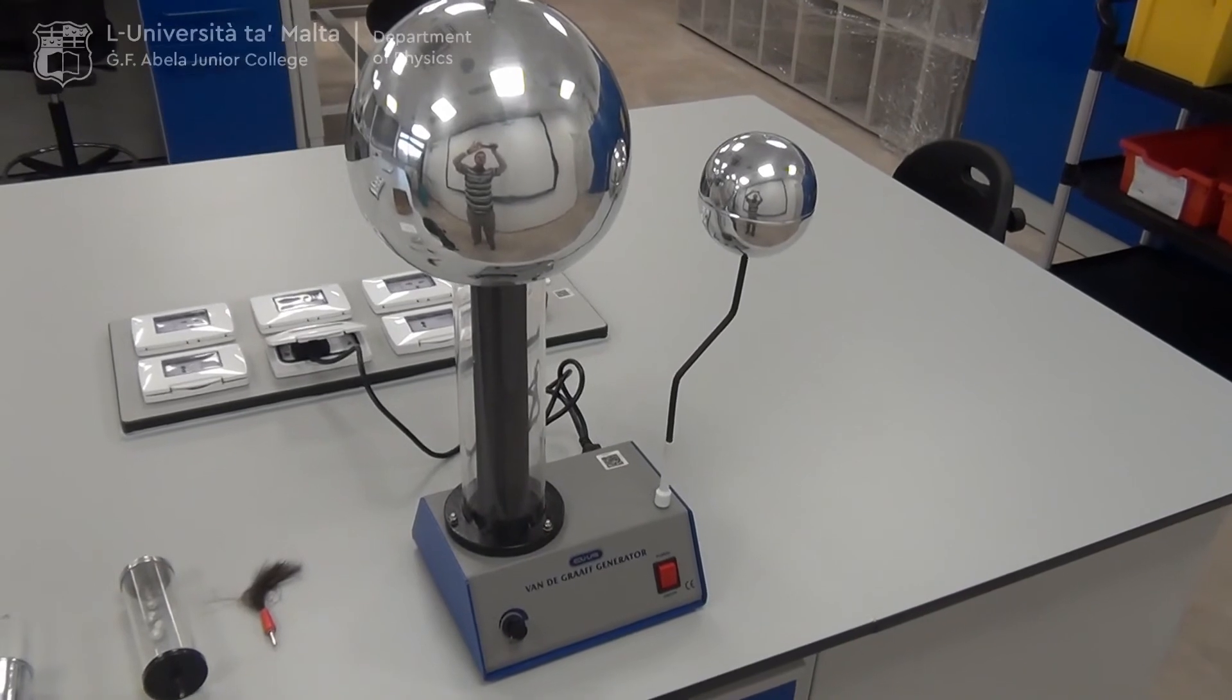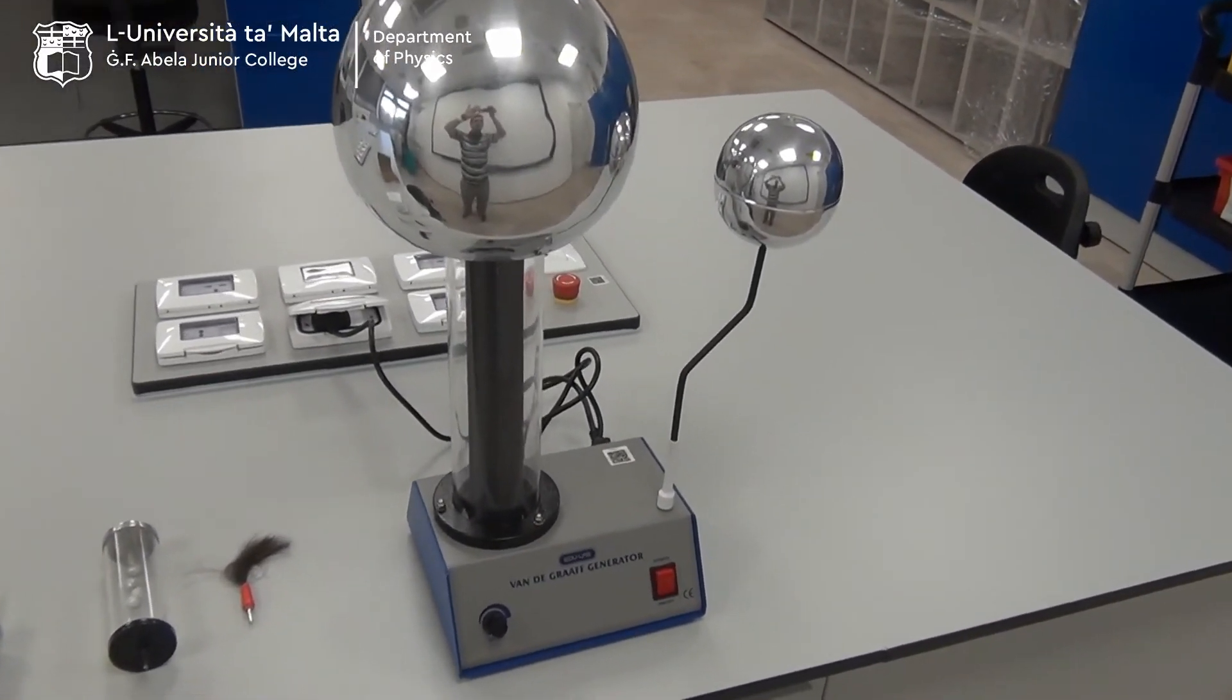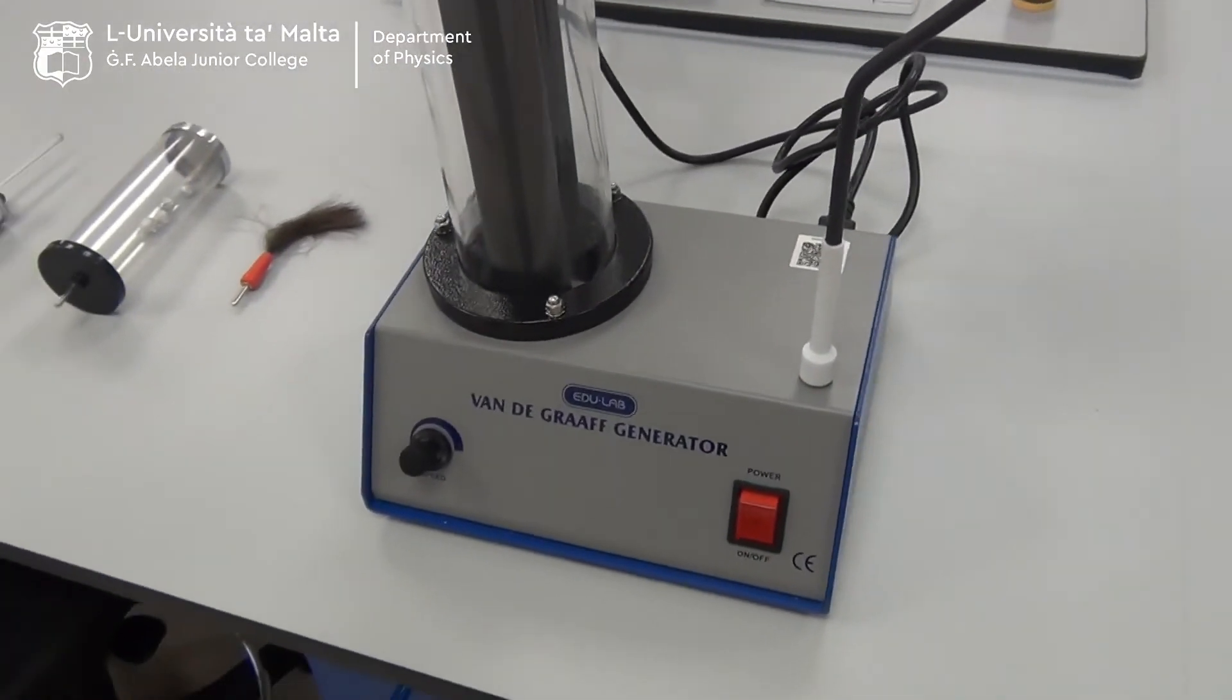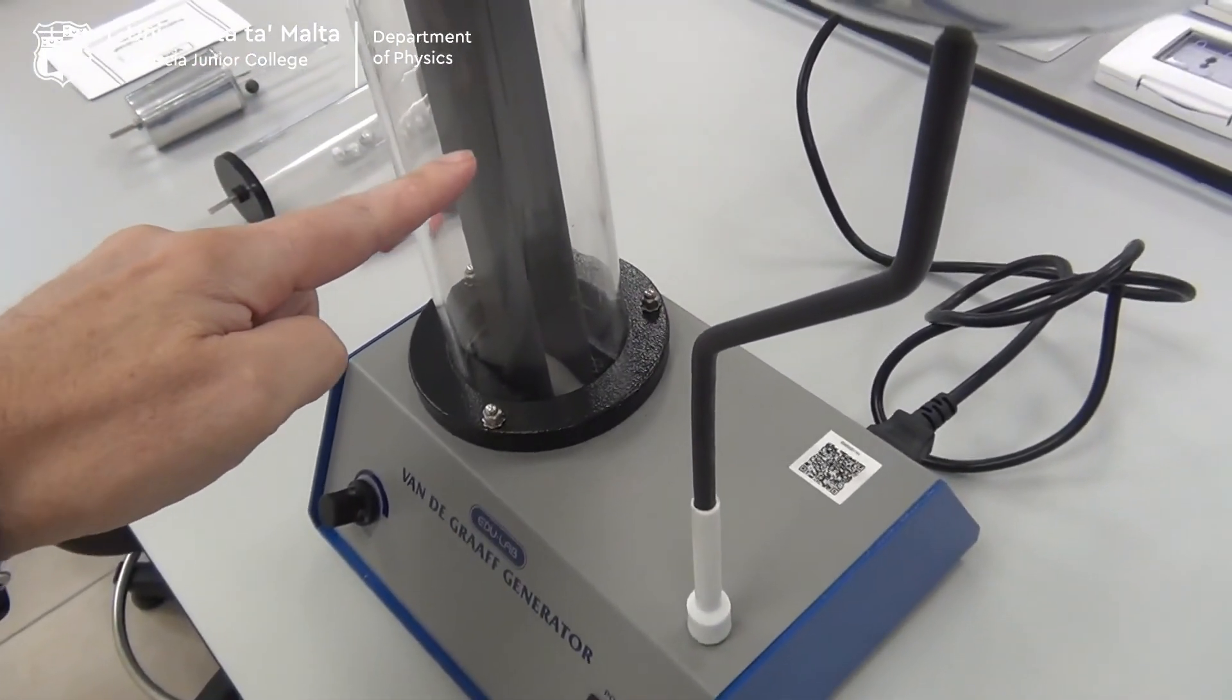This is the Van de Graaff generator, which demonstrates the effects of electrostatics. This Van de Graaff consists of an electric motor down here. This electric motor will spin a belt, this belt, a rubber belt.